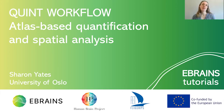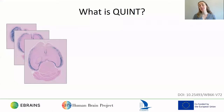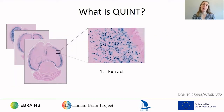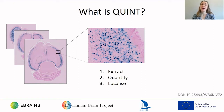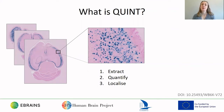Hi, I'm Sharon Yates from the Neural Systems Laboratory at the University of Oslo and for this tutorial I'm going to introduce the QUINT workflow. QUINT is a workflow for extracting, quantifying and localising labelled objects such as cells from histological images from mouse and rat brain. The workflow takes advantage of three-dimensional digital atlases and machine learning technology to enable standardised regional quantification without the need for more time consuming methods such as count estimates by stereology.